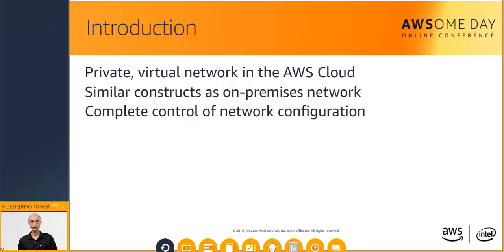Amazon Virtual Private Cloud or VPC allows you to create a private network within the AWS Cloud that uses many of the same concepts as an on-premise network. Much of the complexity of setting up a network has been abstracted without sacrificing control, security, and usability. Amazon VPC also gives you complete control of the network configuration. You can define networking configuration items such as IP addresses, subnets, and routing tables. This allows you to control what you expose to the internet and what you isolate within the Amazon VPC.